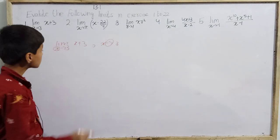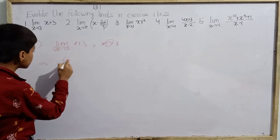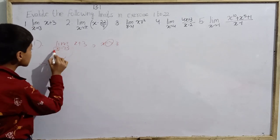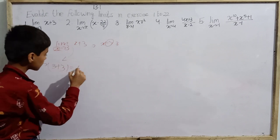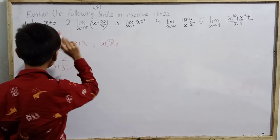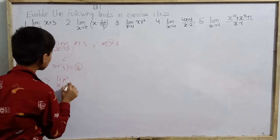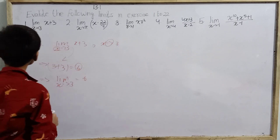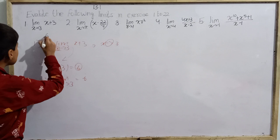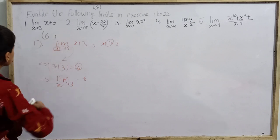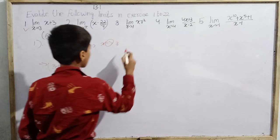So if I put x's value in the given question, x tends to 3, so I keep x = 3. This gives 3 + 3 = 6. So the first question's answer is 6. Really a very easy question!